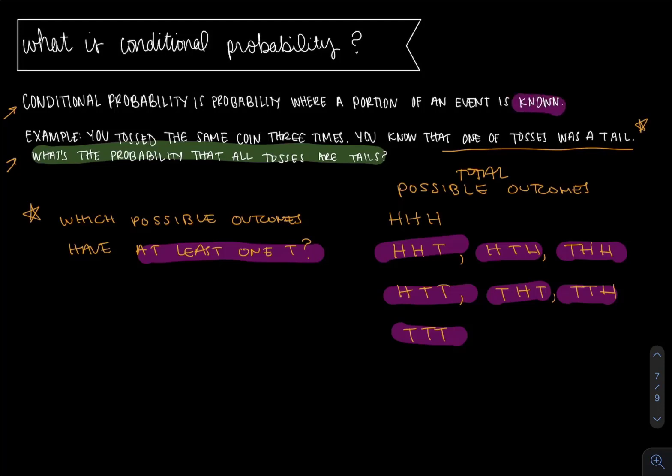That is what we have known, the known condition we have for this probability. This pink information becomes our new total possible outcomes. What I mean by that is when we're doing probability as part over whole or favorable outcomes over total possible outcomes, in conditional probability, your total possible outcomes that you're considering usually gets reduced by that known fact.